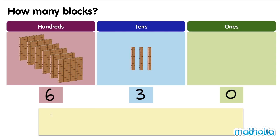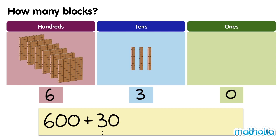The digit in the hundreds place has a value of 600. The digit in the tens place has a value of 30. 600 plus 30 equals 630. There are 630 blocks.